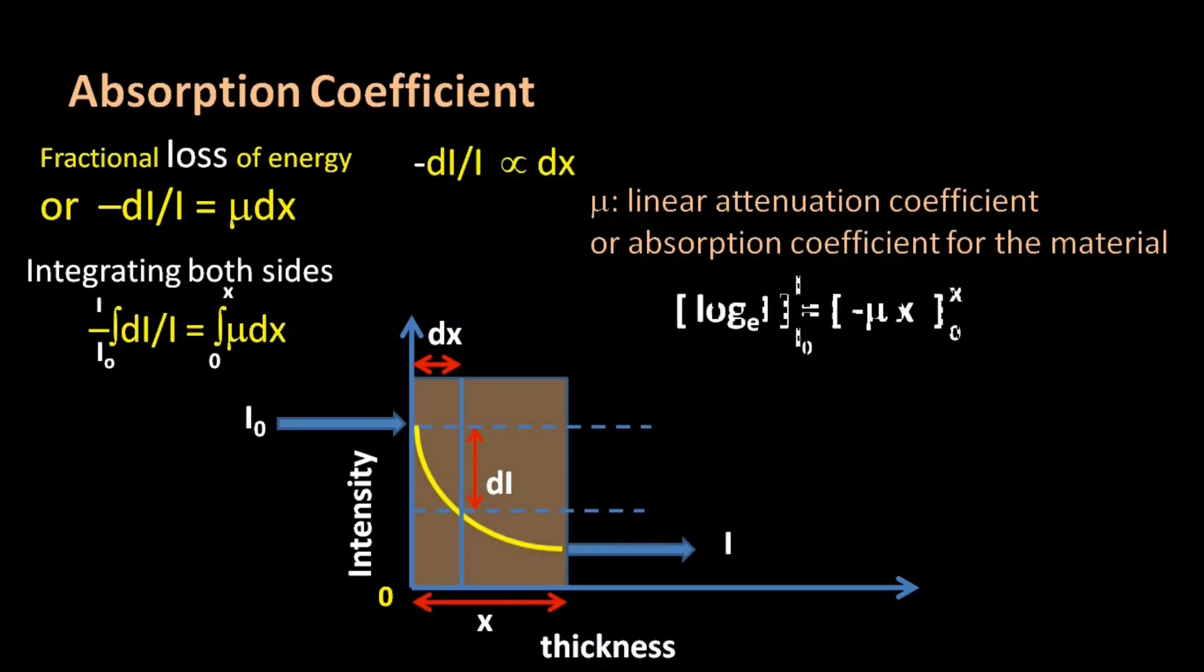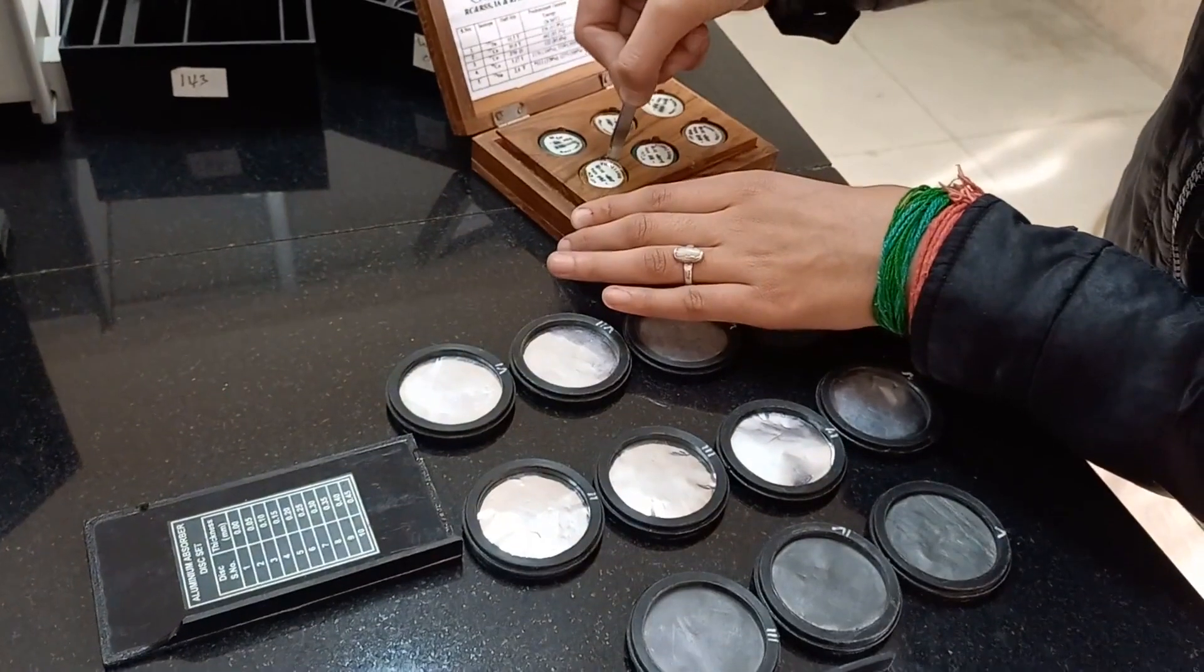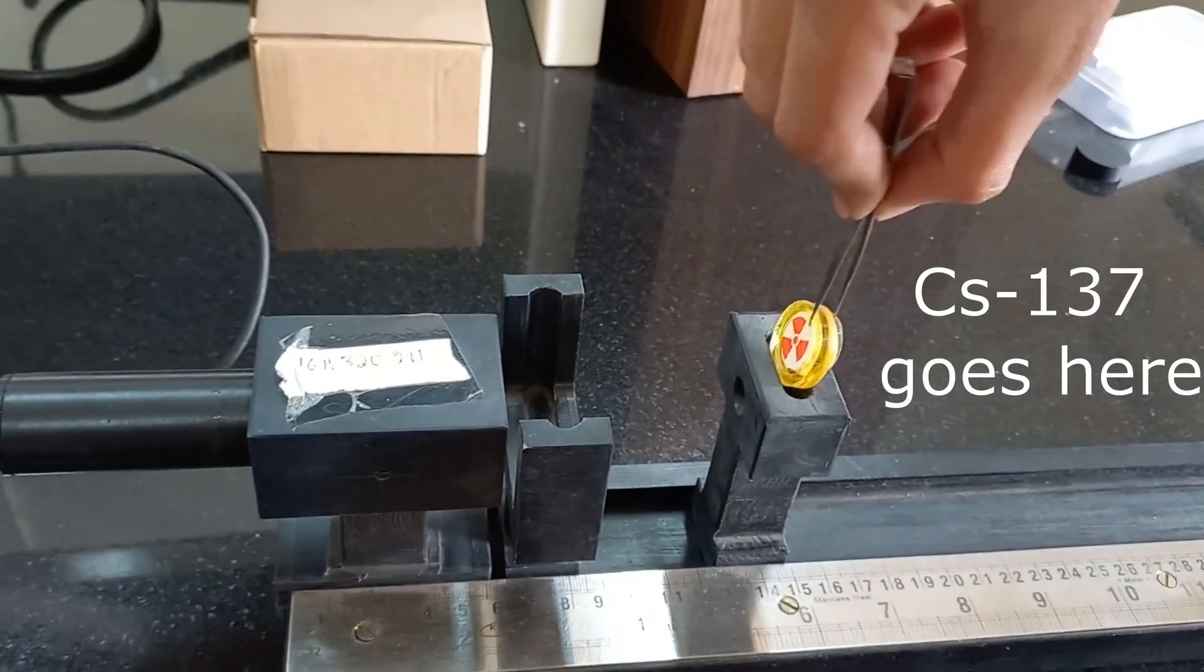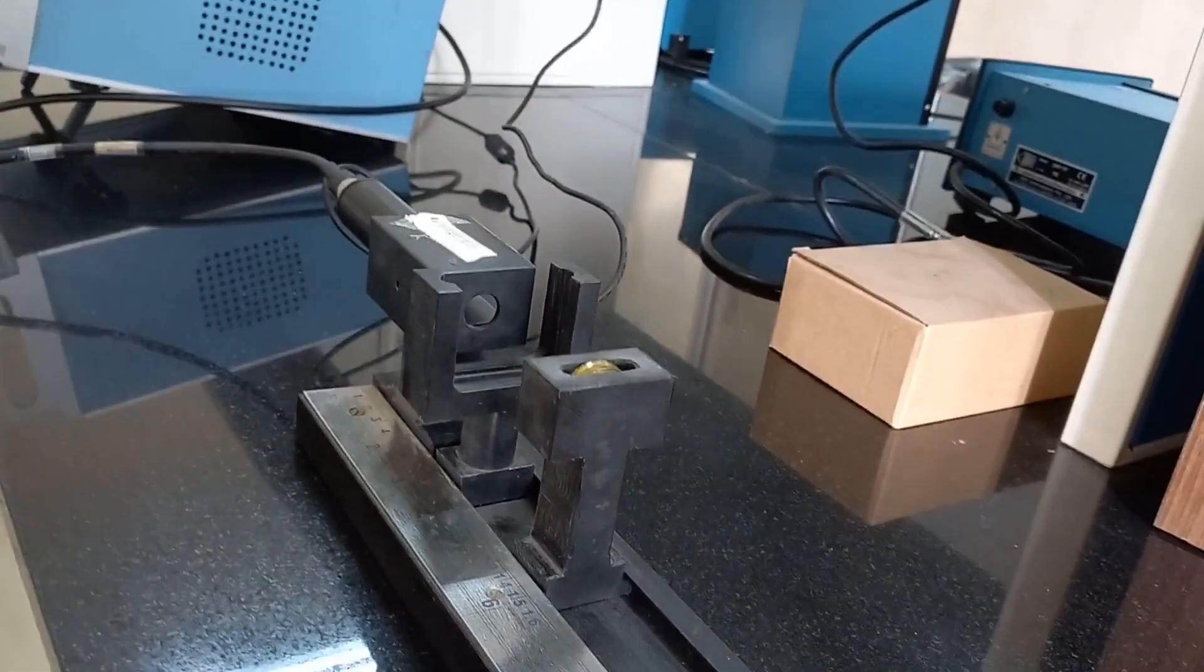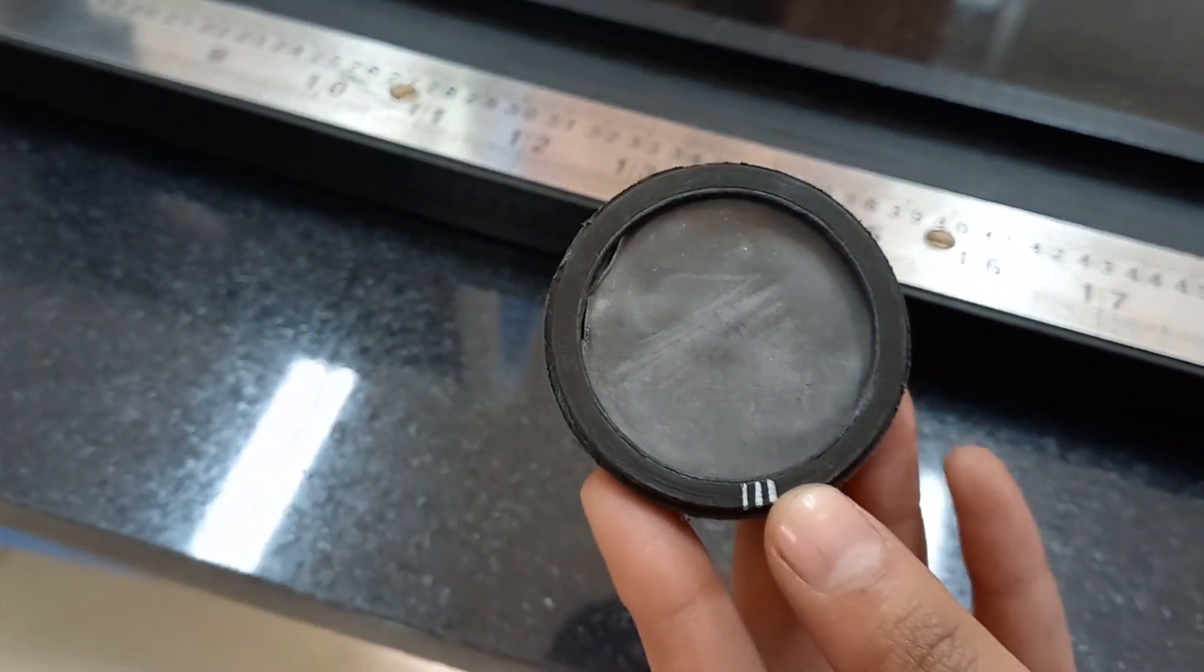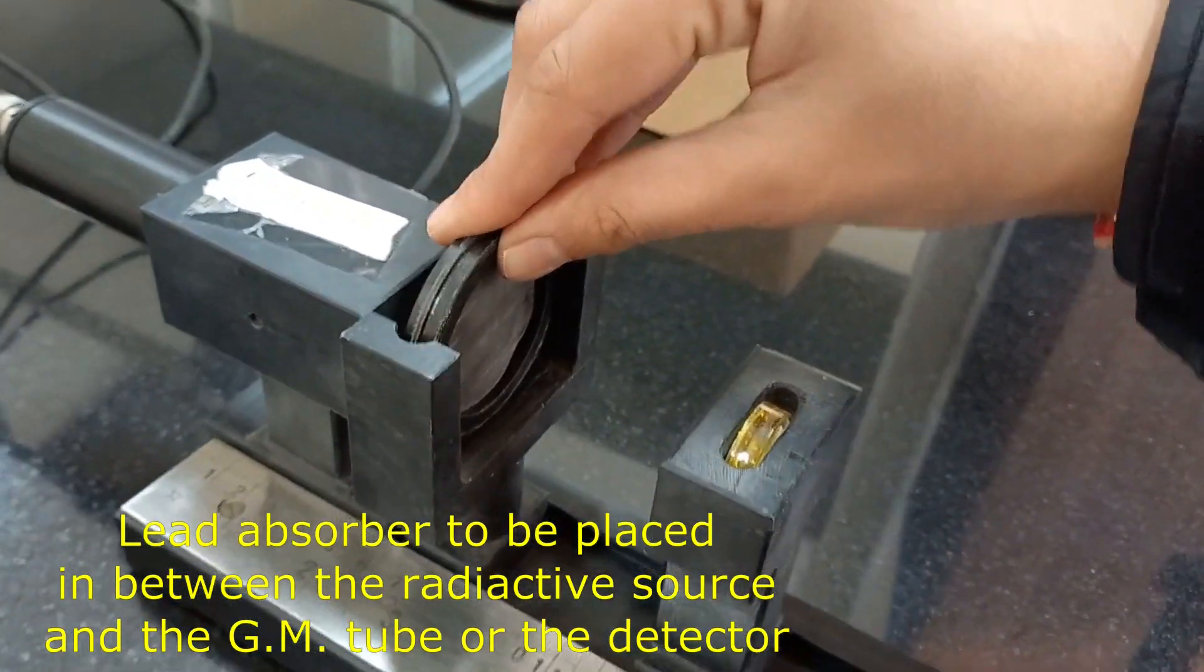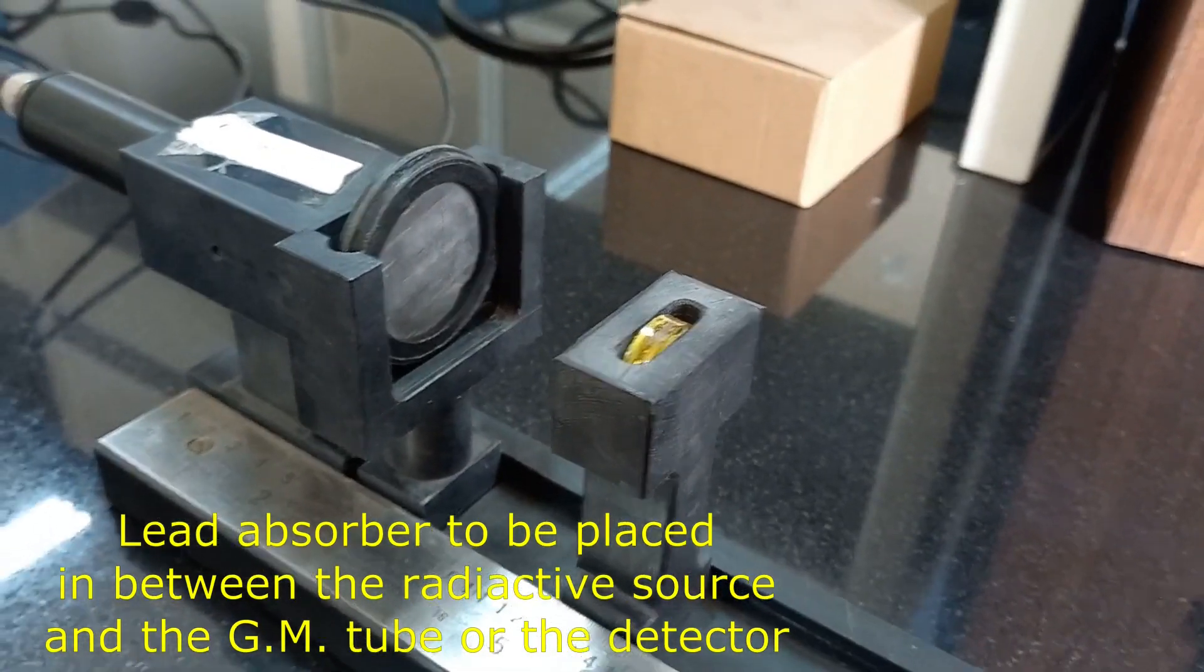Thus, upon integration we reach this result: the intensity of the beam decreases exponentially with the thickness of the absorbing material. Now what does the GM counter have to do with this relation? The absorber has to be placed in between the radioactive source and the GM tube or the detector.